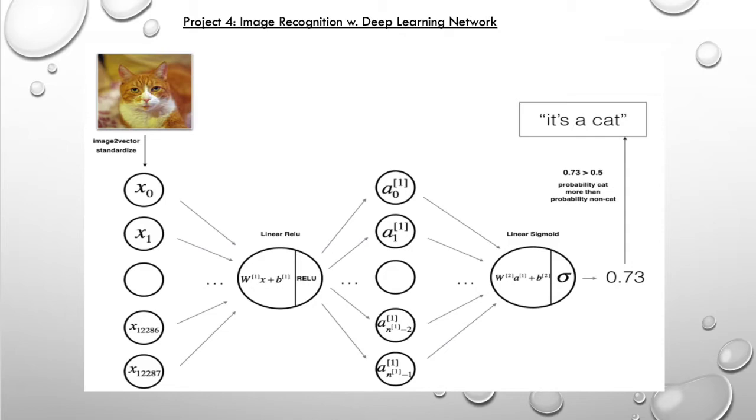You can see from the programming assignment, Andrew shows you the instance of neural network from the very beginning. Later on, basically you just extend the model from 0 hidden layer to 1 hidden layer to multiple hidden layers.